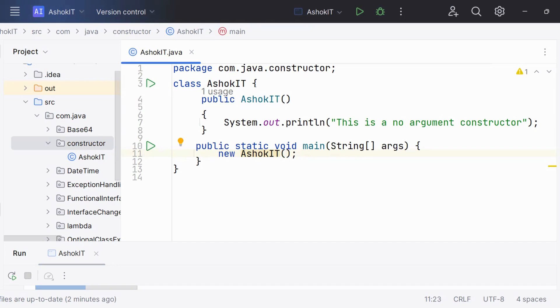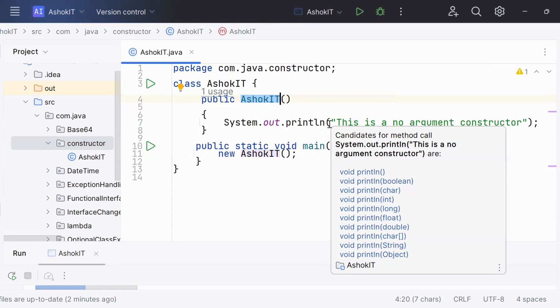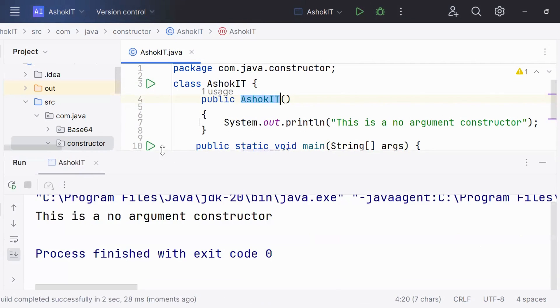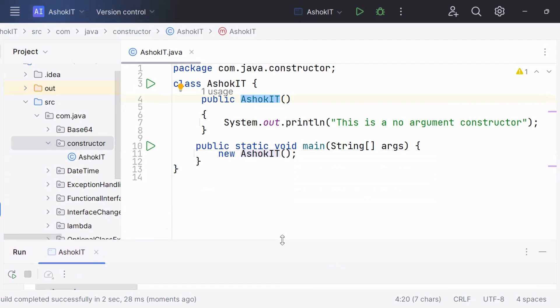Here, you can see that we have a constructor AshokIT, but it is not empty since we've already written a function inside this constructor that says this is no-arg constructor. Now let's try to execute this program and see the output. As you can see, the program has been successfully executed and this output is generated.